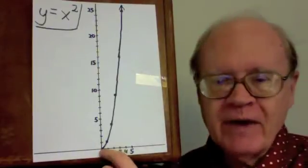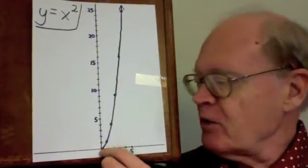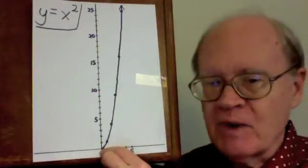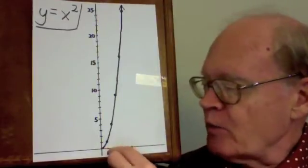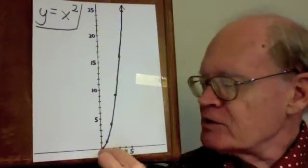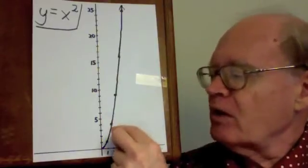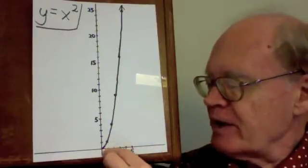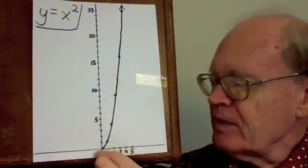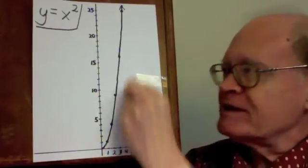0 squared — that is, 0 times 0 — is 0, and so we have the point (0, 0). 1 squared is 1; 1 times 1 is 1, so I go over 1, up 1. 2 squared is 4, so I go over 2, up 4. 3 squared is 9, so I go over 3 and up 9. 4 squared is 16, so I go over 4, up 16.